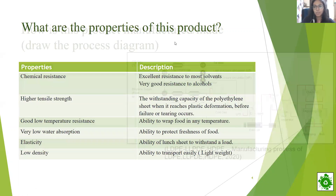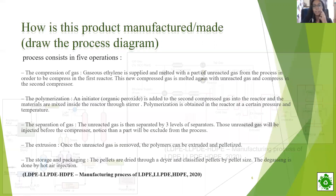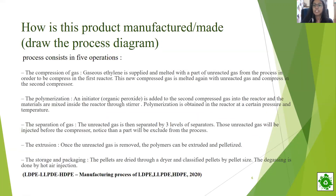Moving on to the process diagram, lunch sheets are manufactured by the process of polymerization of ethylene at very high temperature in a tubular reactor. In these tubular reactors, high pressure polymerization allows for further co-polymerization of ethylene with polar co-monomers. The LDPE process consists of five operations: the compression of gas, the polymerization, the separation of gas, the extrusion, and the storage and packaging.